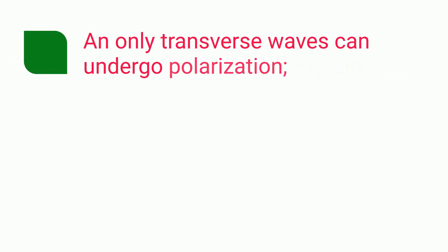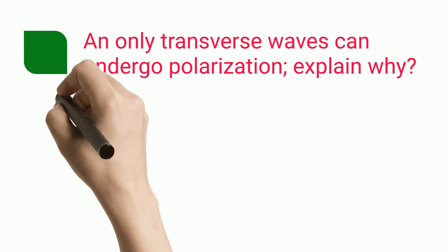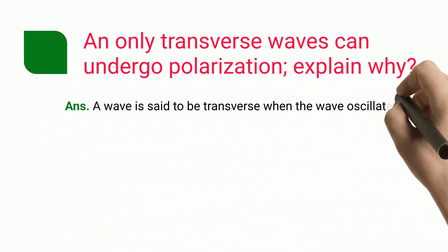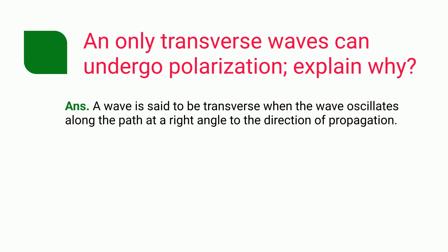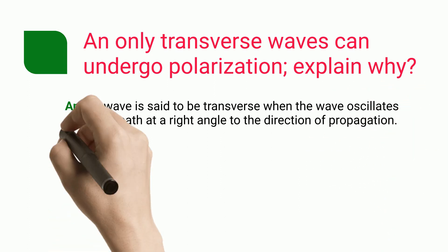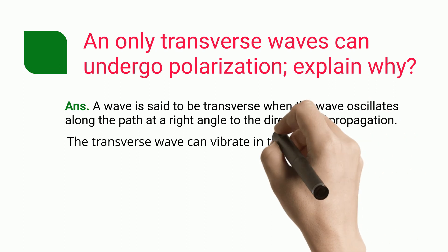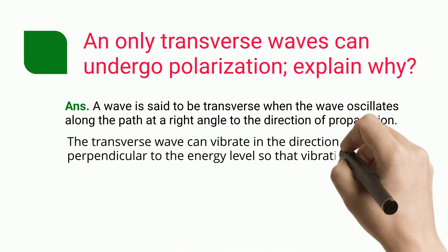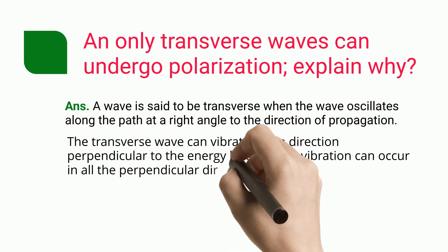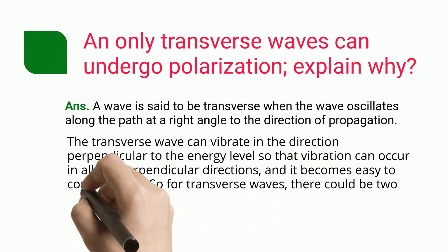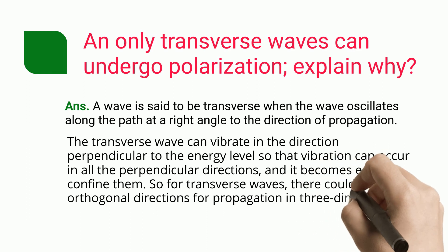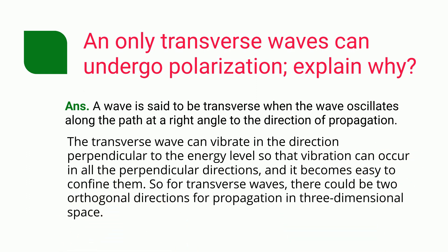Only transverse waves can undergo polarization. A wave is said to be transverse when the wave oscillates along the path at a right angle to the direction of propagation. The transverse wave can vibrate in the direction perpendicular to the energy level, so that vibration can occur in all the perpendicular directions and it becomes easy to confine them. For transverse waves, there could be two orthogonal directions for propagation in three-dimensional space.